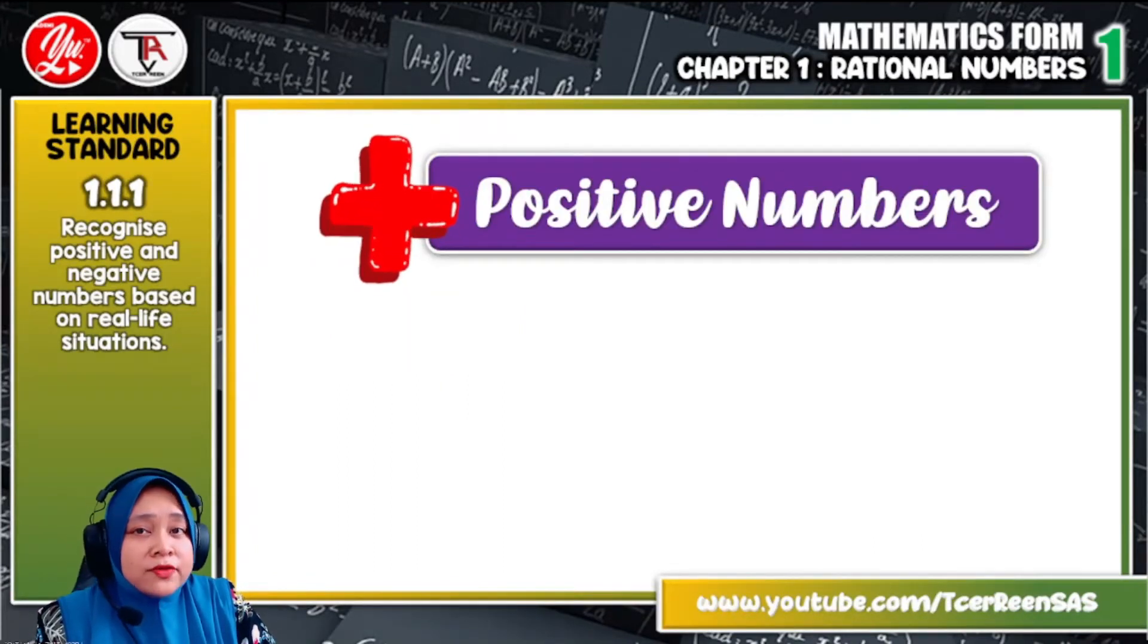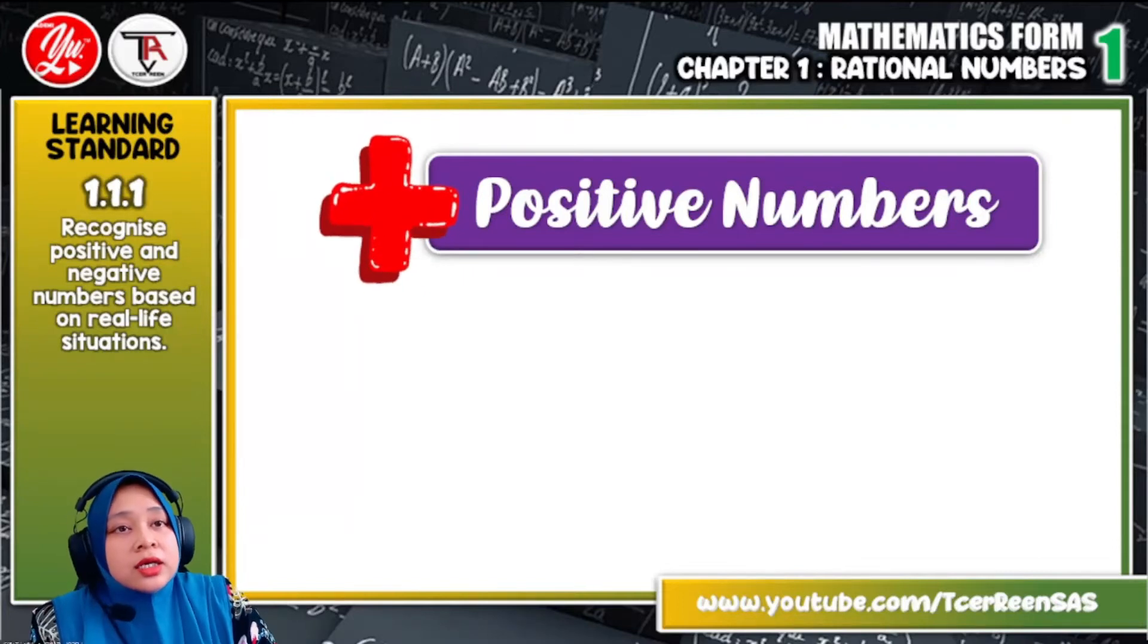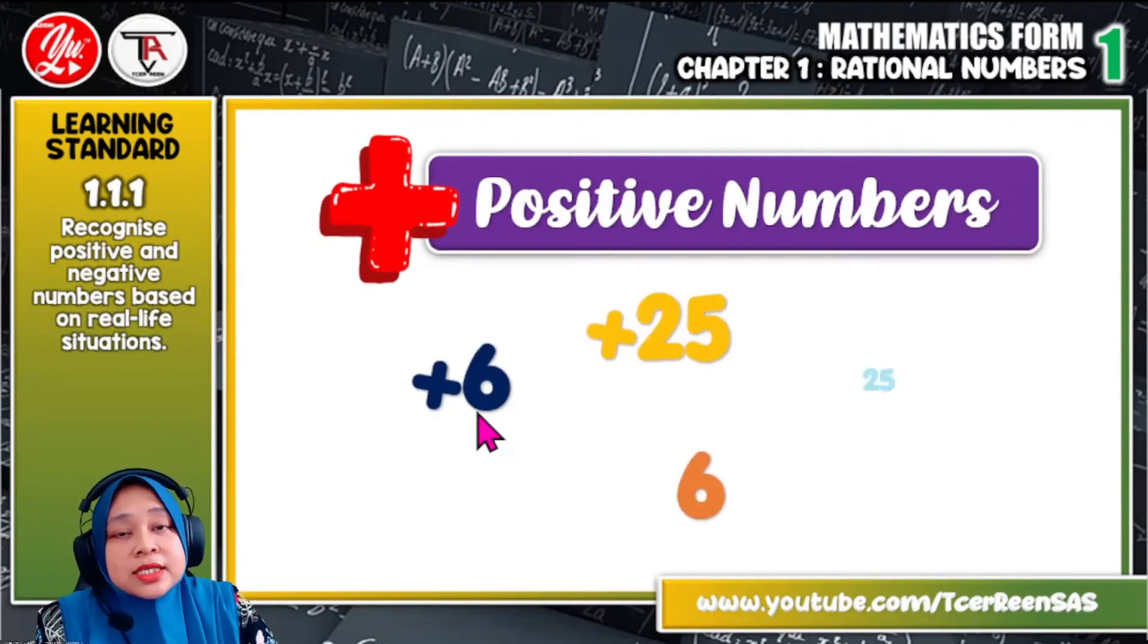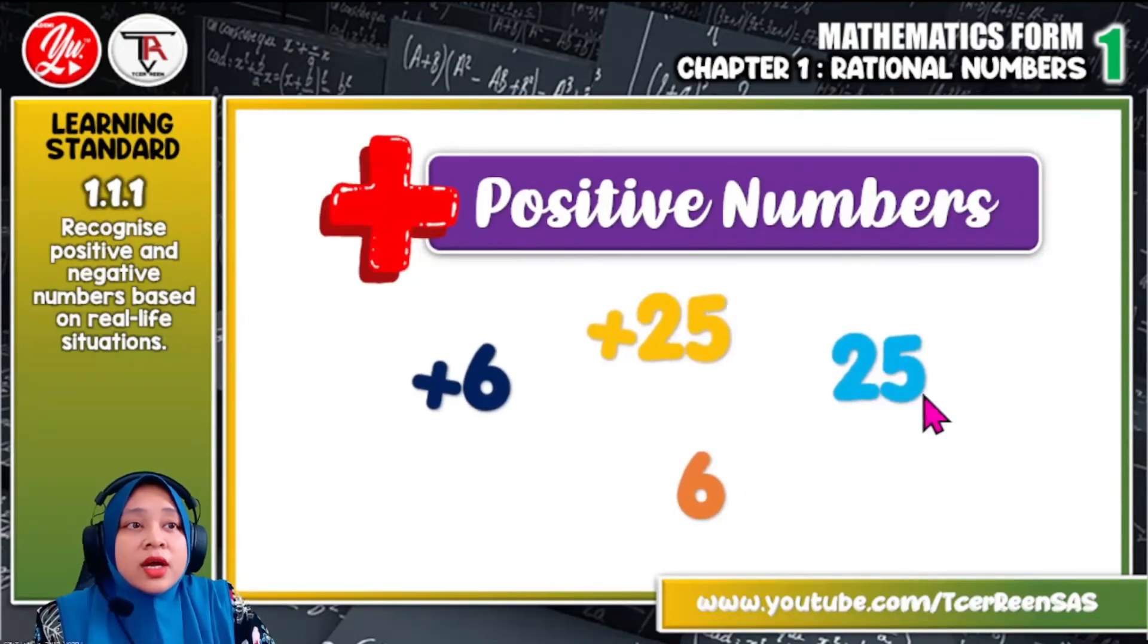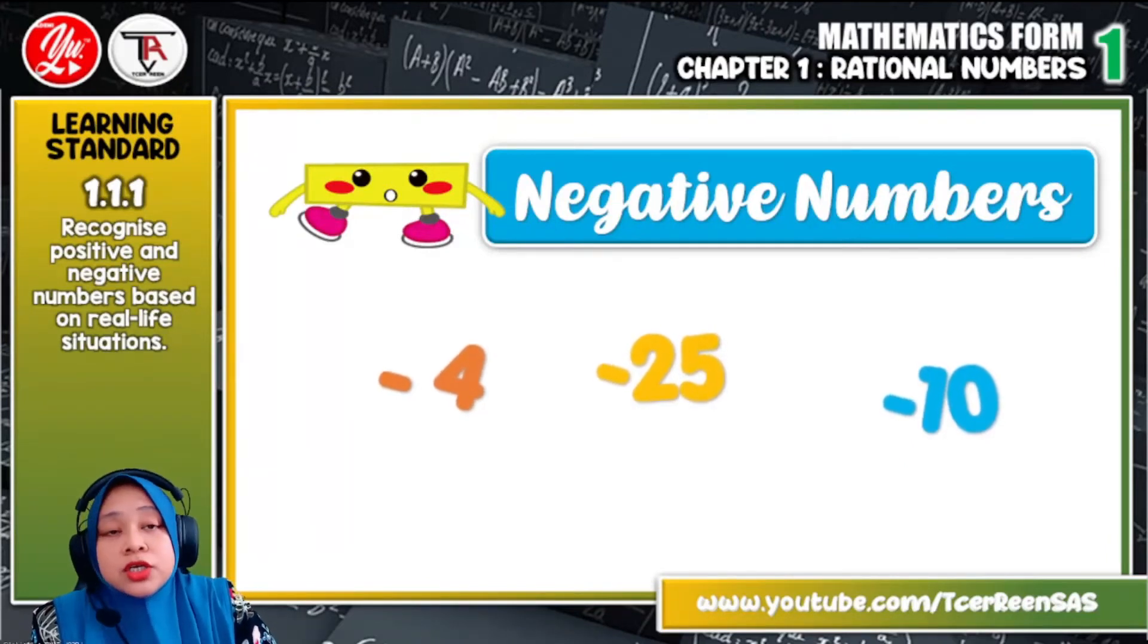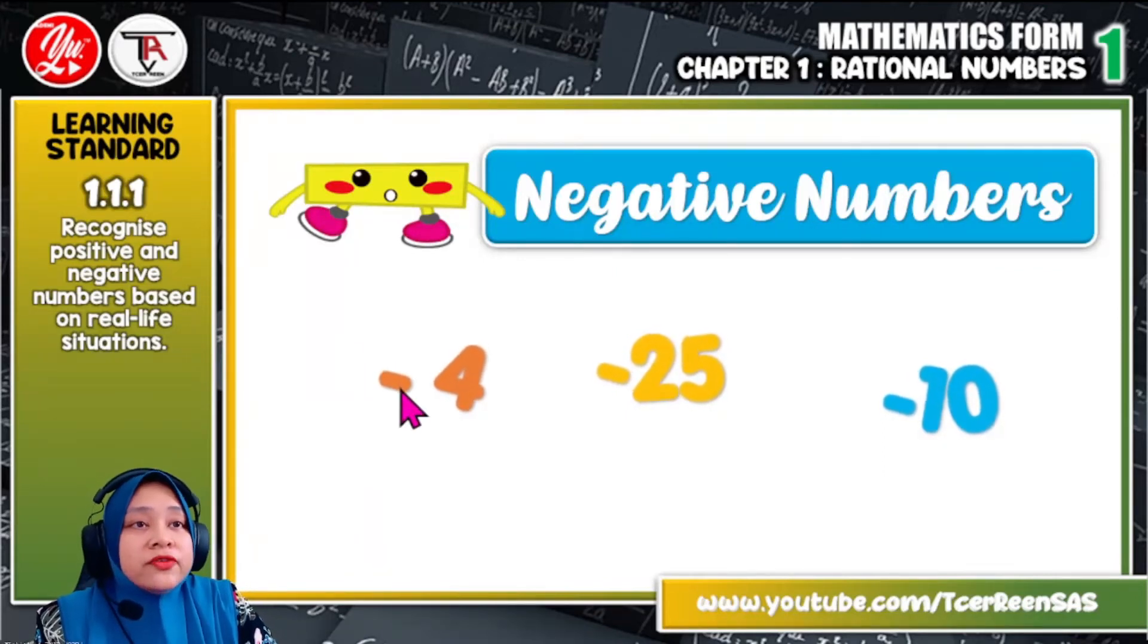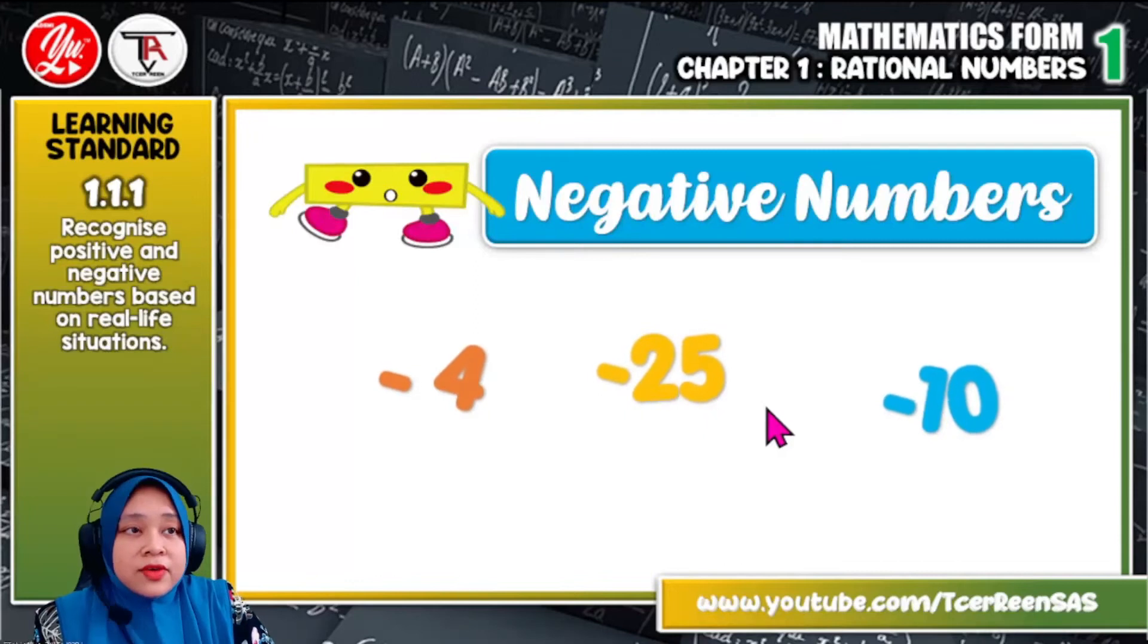Okay, what is actually positive numbers? Positive numbers is a number written with the plus sign or without any sign. The example of positive numbers is like plus 6, plus 25, and then 6 or 25 without any plus signs. Okay, how about negative numbers? Negative numbers is the number written with the minus sign or we call it negative sign. So how to pronounce this number is negative 4, negative 25, and negative 10.